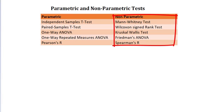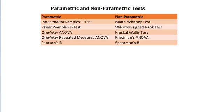Non-parametric tests are handy when you think you're going to use a parametric test — which is always preferable — but for one reason or another, usually a small sample size, you can't. Every parametric test has a non-parametric equivalent, shown in this table.